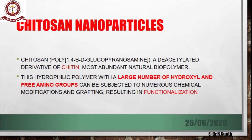The first nanoparticle we will see is chitosan — poly-1,4-beta-D-glucopyranosamine — a deacetylated derivative of chitin. Chitin is the most abundant natural biopolymer, present in crustaceans like crabs. Chitosan is a hydrophilic polymer with a large number of free hydroxyl and amino groups. Through these free functional groups, it can undergo numerous chemical modifications and grafting, resulting in functionalization of the nanoparticles.